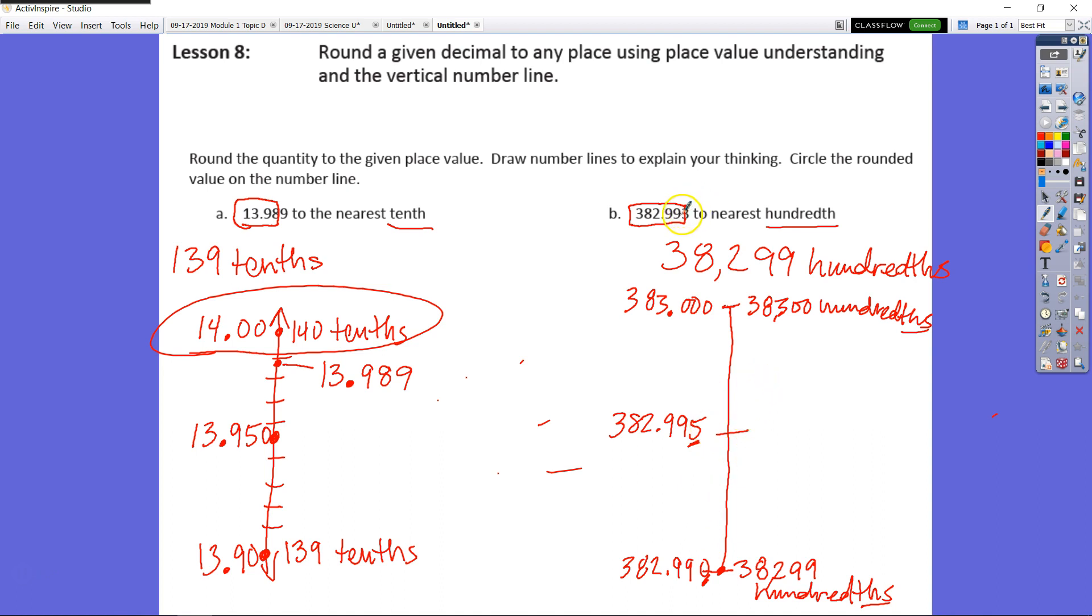Now I need to determine, looking at this whole number here, where would it fall on my number line. I know that this would be 990, this would be 991, 992, 993 will fall right here. So that's where my number would be. My entire number, 382,993 thousandths. So I would circle this number. I would round this down to the nearest hundredth, which would be 382 and 99 hundredths.